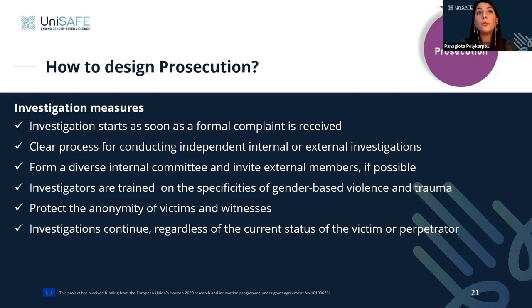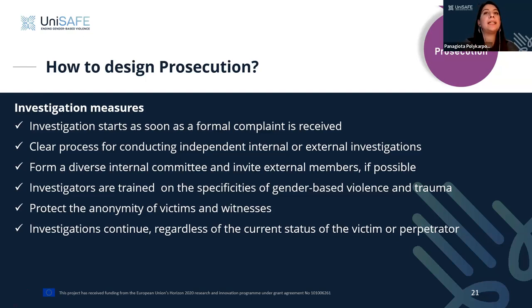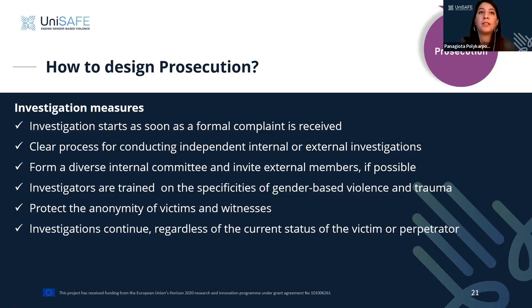An investigation can start only when a formal complaint is made. Informal or anonymous complaints are used to assess the situation, identify patterns, assess the context and behavior of the perpetrator, and take protective and preventive measures. There must be a clear process for conducting internal or external investigations. If there is an internal committee, its composition should be diverse — for example, a student member if the victim is a student. Having external members is good practice, but we must avoid conflicts of interest, especially when the accused is a member of staff.